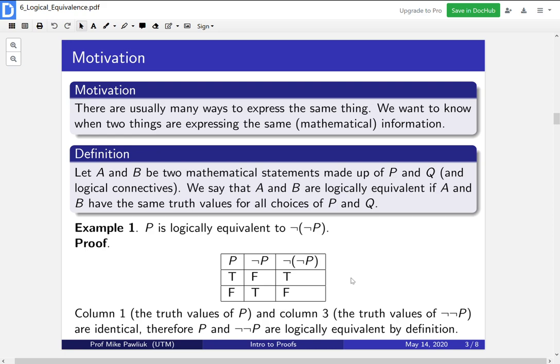So since column 1, which is the truth values of P, and column 3, which is the truth values of NOT NOT P, are identical, we say that P and NOT NOT P are logically equivalent by the definition. So for all possible inputs of P, you get the same outputs.